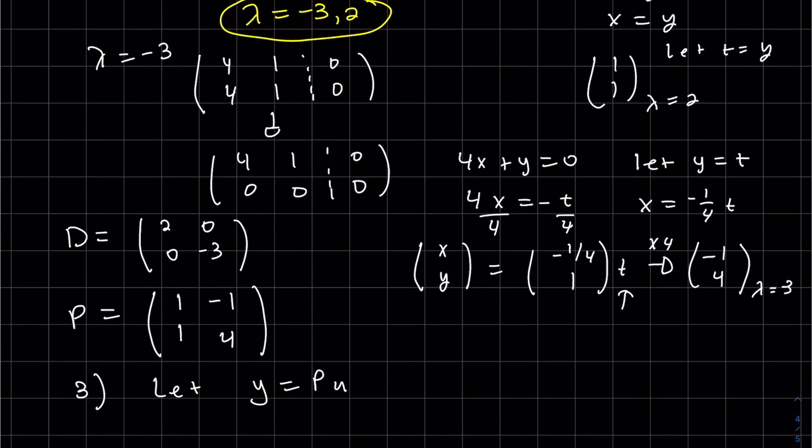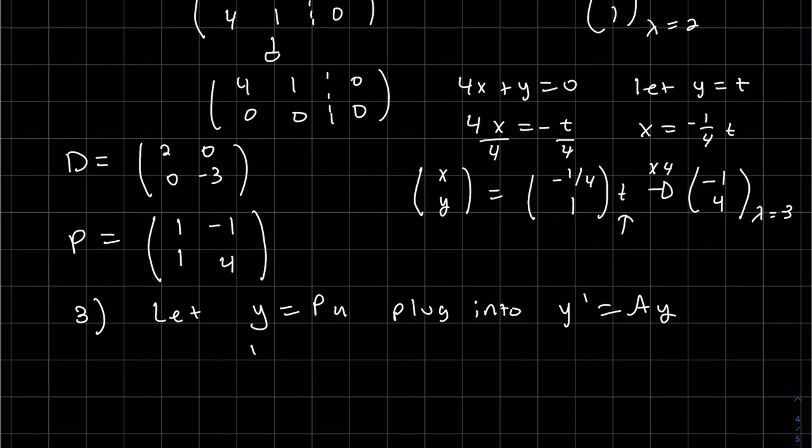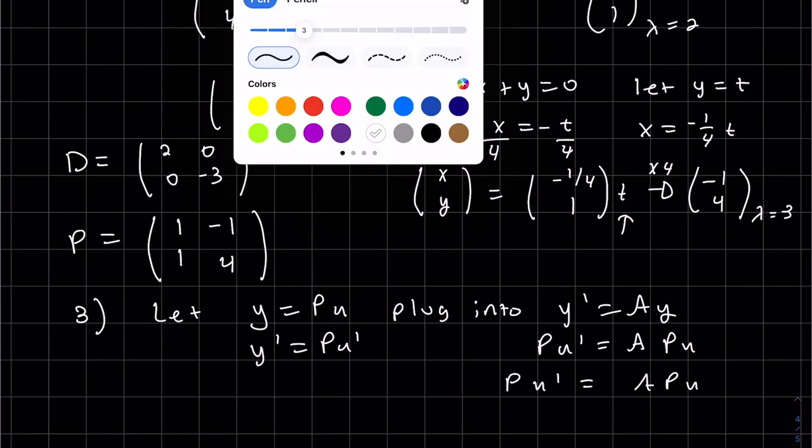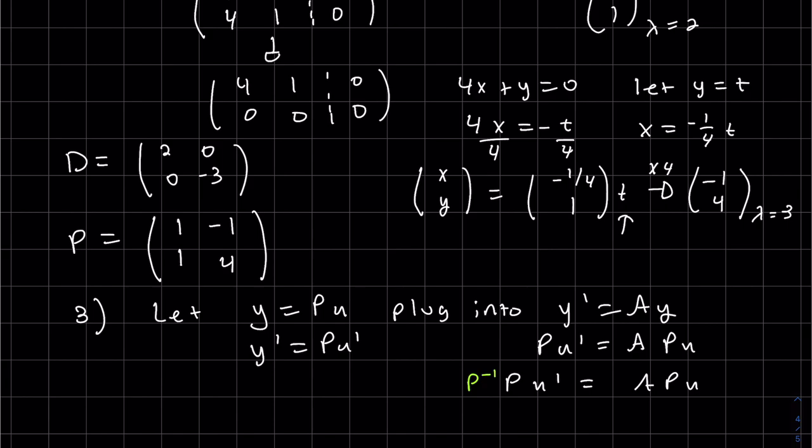There's our substitution. Remember, we're plugging it into that equation. So we need to take the derivative. The derivative is Pu prime and y is Pu. And I will left multiply. And there's my diagonal u.